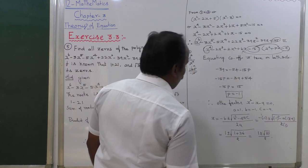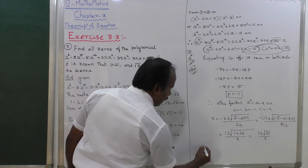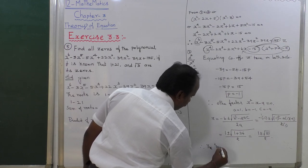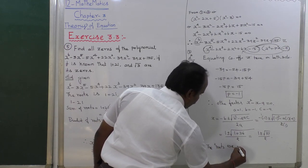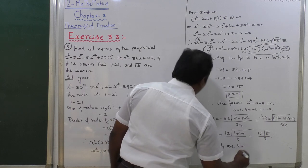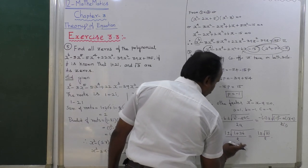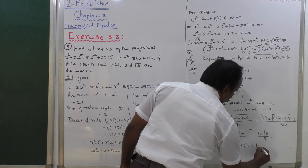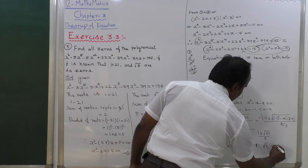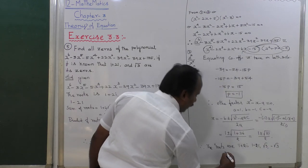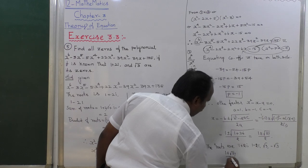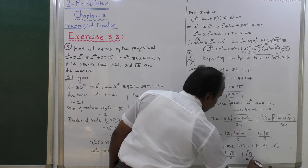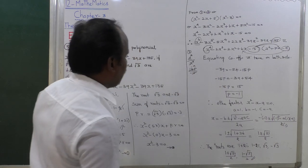Therefore all the roots of the given equation are: 1 plus 2i, 1 minus 2i, root 3, minus root 3, 1 plus root 37 divided by 2, and 1 minus root 37 divided by 2. We have found all six roots of the given equation.